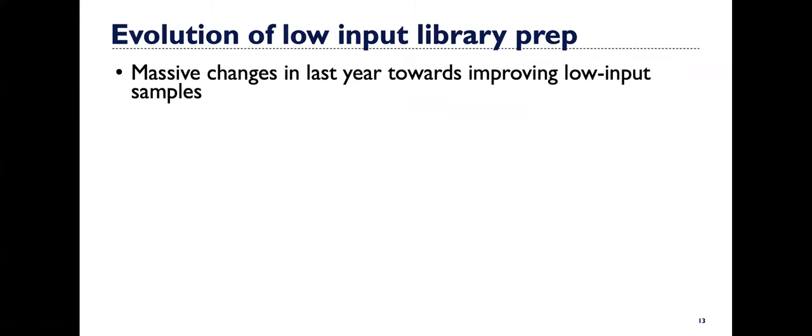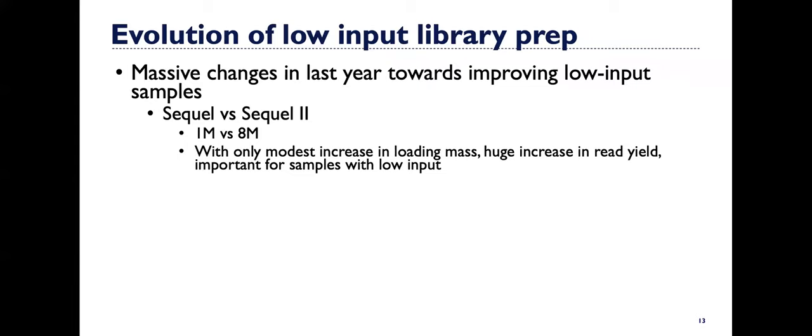In the past year or several years, there's been a lot of evolution of low input library preps. There's been some changes towards improving low input samples. A few of those things were going from the RS2 to the Sequel and then from the Sequel to the Sequel 2. The big thing with the Sequel 2 system is you're able to get more reads from the same run. And with only a modest increase in loading mass, you can get a huge increase in read yield, which is important for samples with low input. So you might be loading maybe three times the molar concentration on a Sequel 2 machine than what you might have been doing on a Sequel 1, but you're able to generate maybe six or seven times the amount of data.